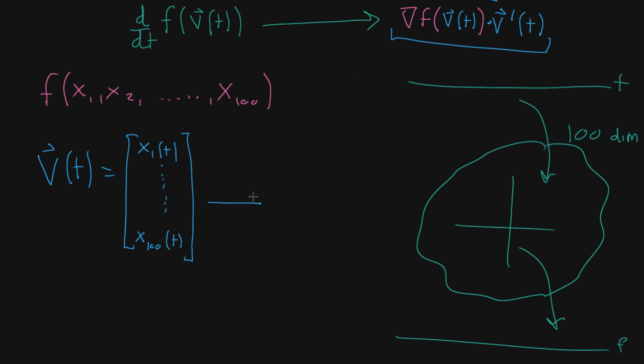So when you take this, and you take the derivative with respect to t, all that means is that each component, you're taking the derivative of it, dx1 dt, dx2 dt, on and on, until d, and then the 100th component, dt.